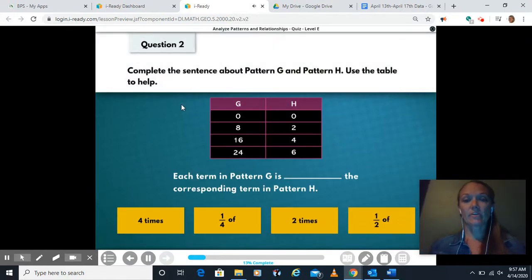Complete the sentence about pattern G and pattern H. Use the table to help. So each term in pattern G is what to the corresponding term in pattern H? So is zero, let's try each one. Is zero four times zero? Is eight four times two? Is sixteen four times bigger than four? Is twenty-four four times bigger than six? Yeah, all of these are times by four in order to get what's over here. Is what's in column G a quarter of the size of H? So is eight a quarter smaller than two? Is sixteen a quarter the size of four? Is twenty-four a quarter of six? No, it's the opposite way.